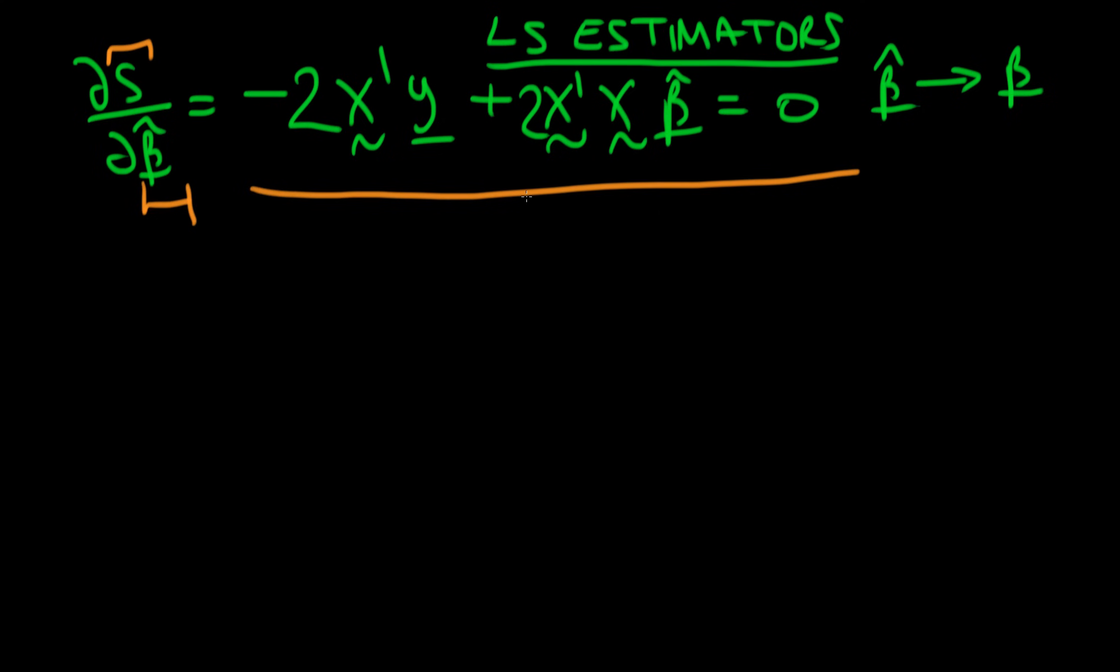The idea here is that now we have to rearrange this expression in order to get our beta hat. So a first step to do that is to take this 2X'Y over to the other side, in which case we get 2X'X times beta hat is equal to 2X'Y.